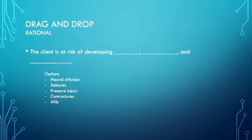In the drag and drop rationale, you are able to select more than one. In this case, it's selecting what are they at risk for developing — what three things are they at risk for developing?